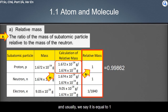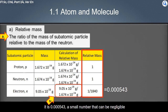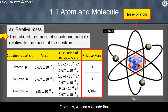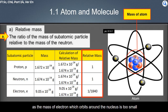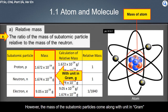For the electron, its relative mass equals its mass divided by the mass of the neutron, which is 0.000543 — a small number that is negligible. From this we can conclude that the mass of an atom is concentrated in the nucleus, as the mass of the electron orbiting the nucleus is too small. Relative mass is dimensionless, meaning it comes without a unit, while the actual mass of subatomic particles comes with units in grams.